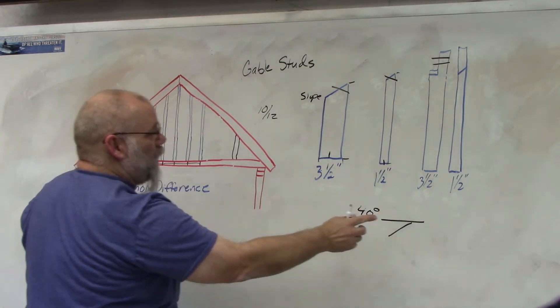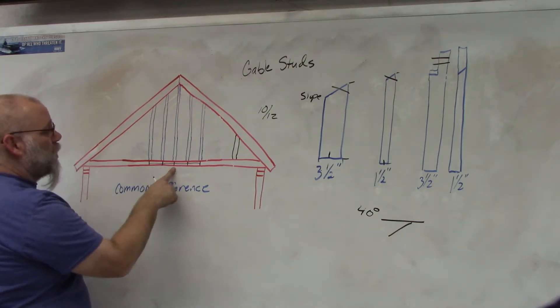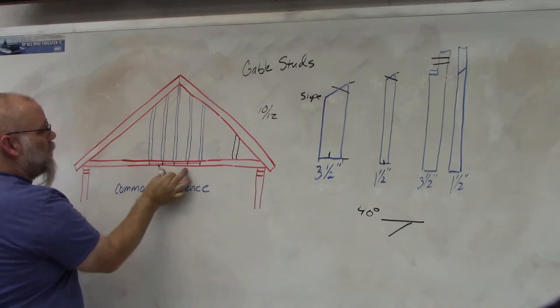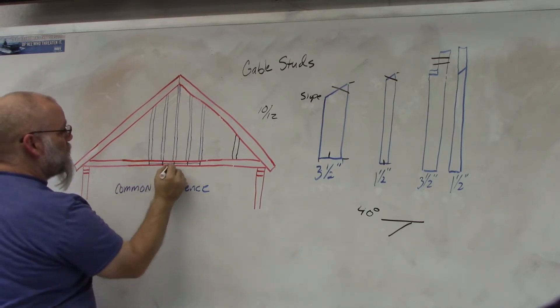So those are the three different types. Now, how do you lay them out? The first thing is to find the center. I like to go from the center because then if I go in either direction then these two rafters would be the same and then the next two would be the same. So I find the center